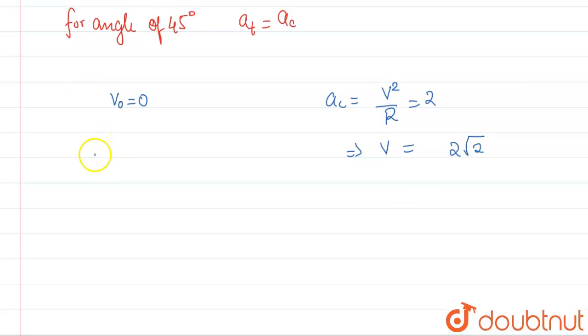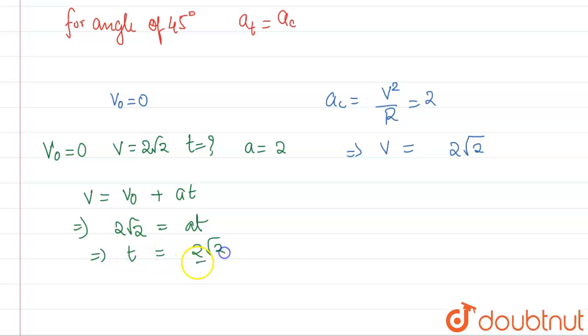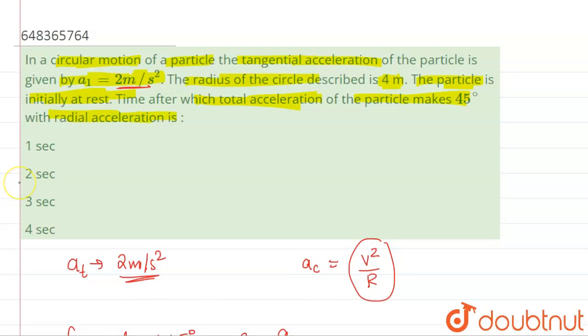So the velocity is 2 root 2. After what time? We have to find out by using the equations of motion. v₀ is equal to 0 and v final is equal to 2 root 2. Time is unknown and acceleration is given as 2. So we will follow the equation v is equal to u plus at. So 2 root 2 will be equal to at. From here we will have t will be equal to 2 root 2 by 2. So this will be equal to root 2 seconds. So this will be our answer. Got it?